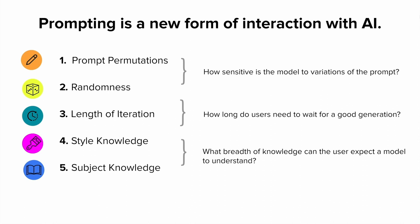We looked at three questions: first, how sensitive are these models to variations of the prompt? Second, how long on average do users need to wait for a good generation? And third, what breadth of knowledge can the user expect a model to understand?